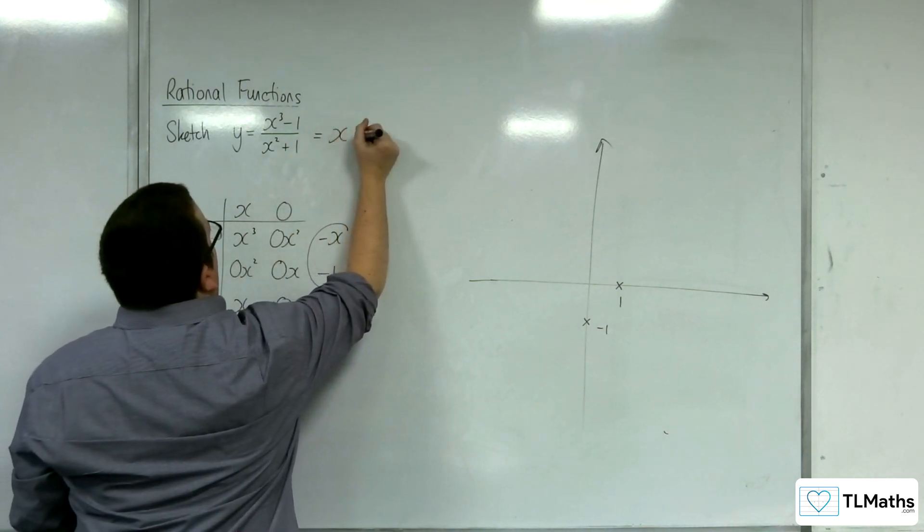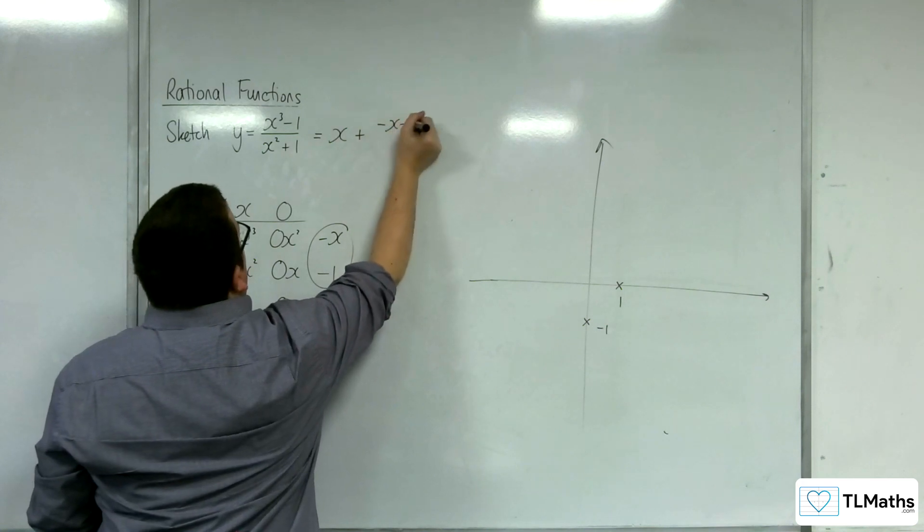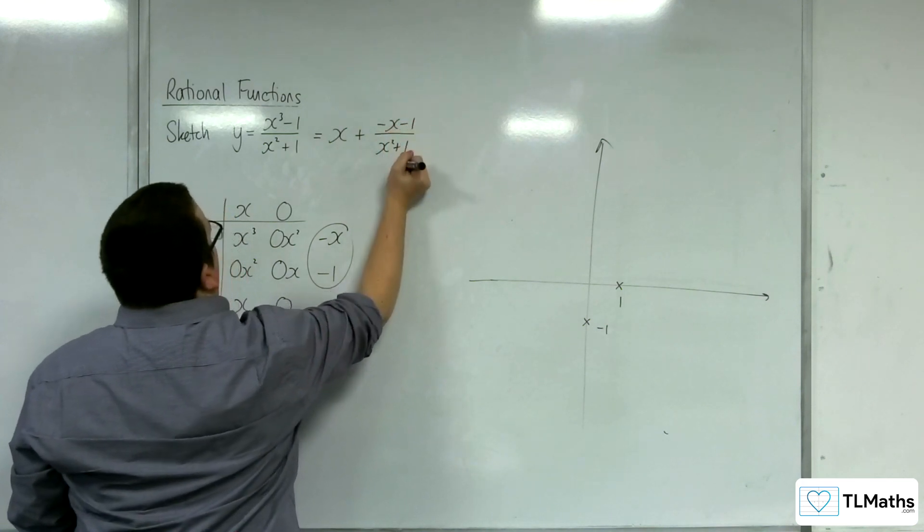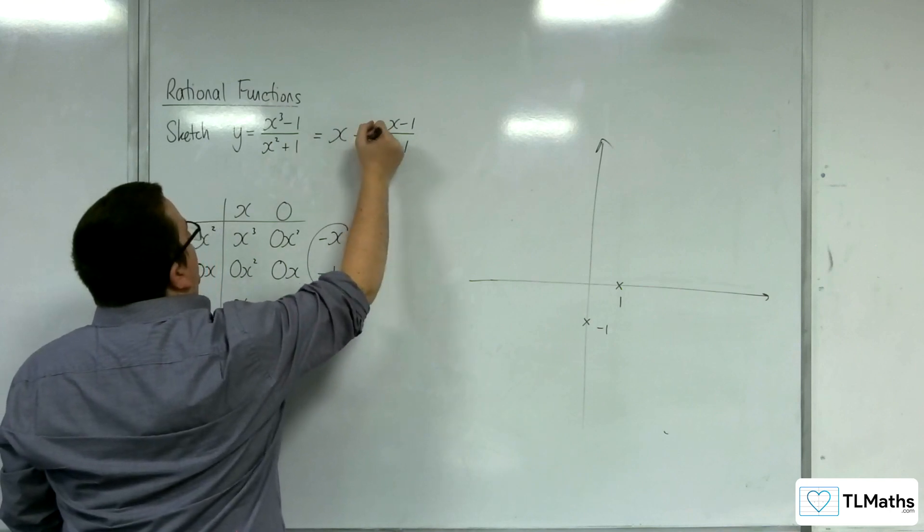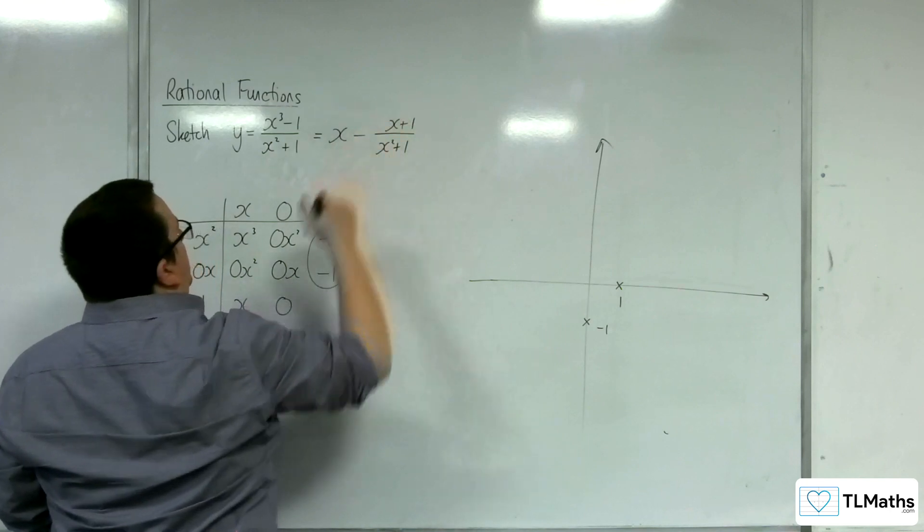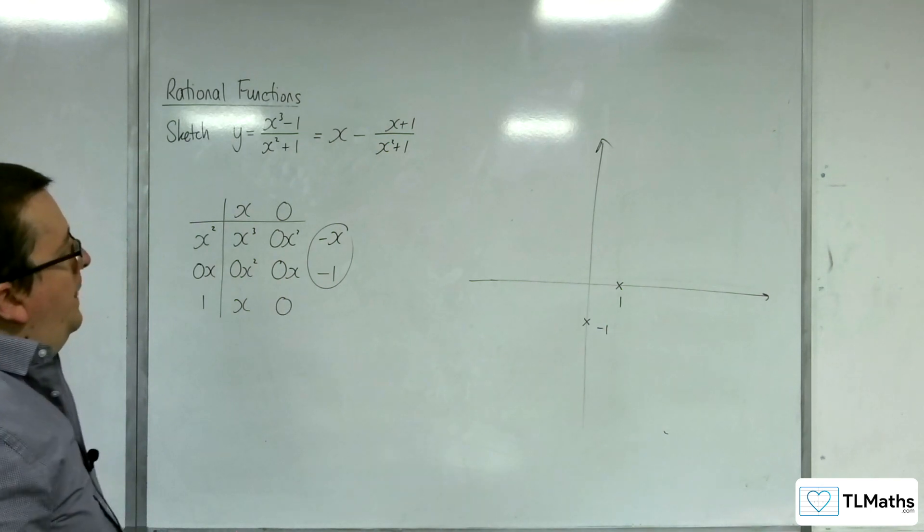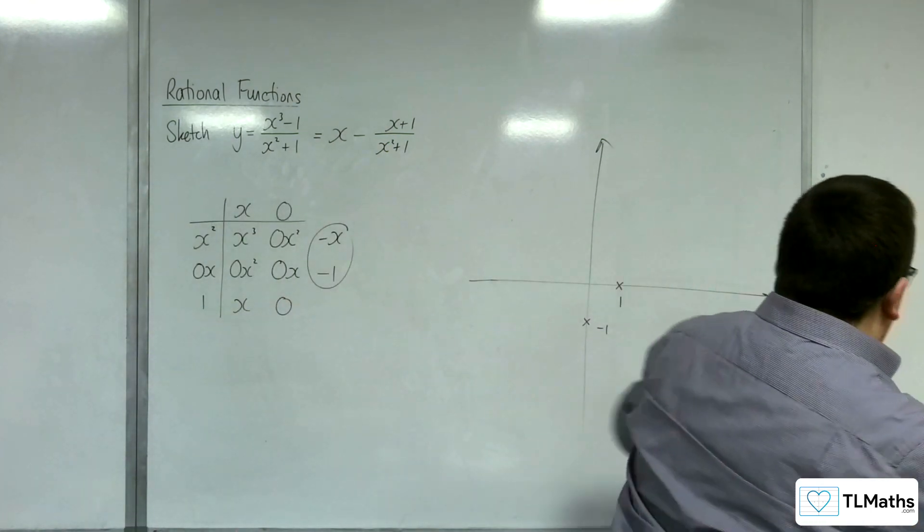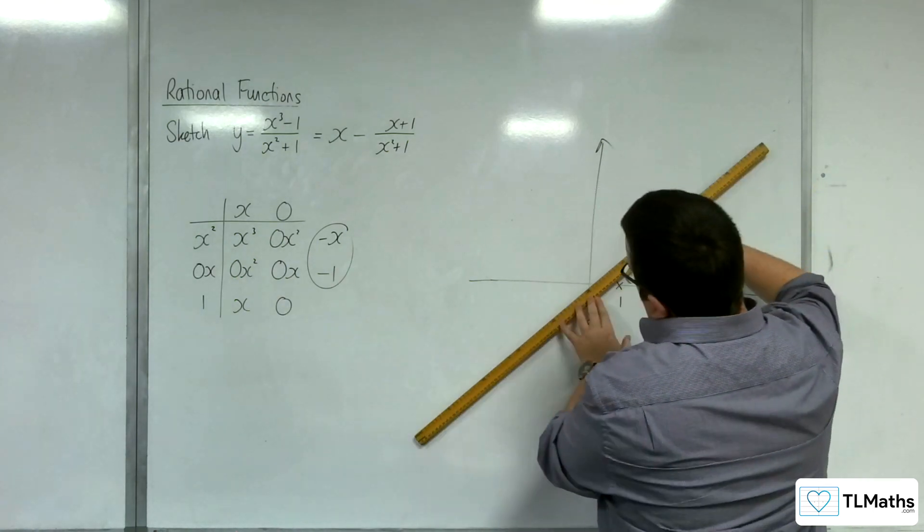And so this is equal to x plus minus x, take away 1, over x squared plus 1. Alternatively, you could write it as take away x plus 1 over x squared plus 1. So y equals x is our oblique asymptote.